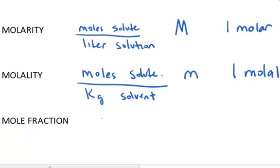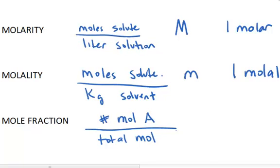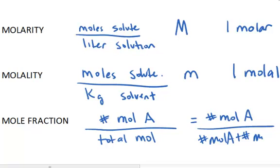Mole fraction is the number of moles of one part of your solution, say moles of A, divided by the total number of moles in your solution. So if it's a solution with one solute and one solvent, and you're concerned about the mole fraction of the solute A, it would be defined as the number of moles of A divided by the number of moles of A plus the number of moles of B, if you had a two-component system of A and B.